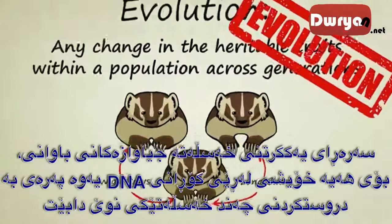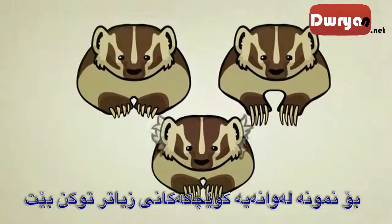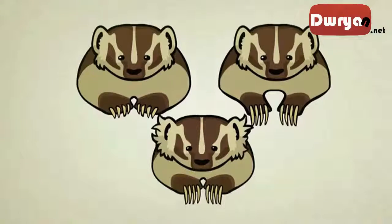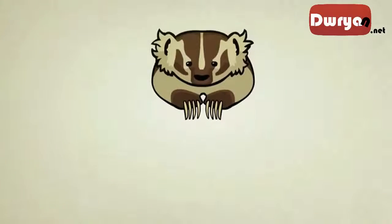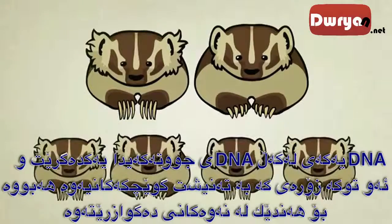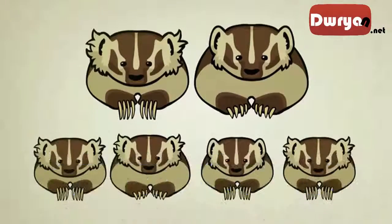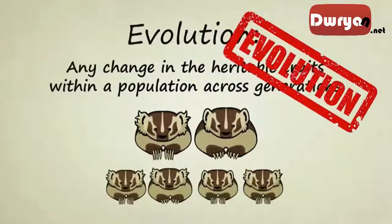Besides a unique recombination of her parents' traits, she might also have developed some completely new traits of her own due to DNA mutations — maybe extra hairy ears, for example. If she survives long enough to have kids, her DNA will combine with the DNA of her partner, and she'll pass on those extra hairy ears to at least some of her children. Again, evolution has officially occurred.